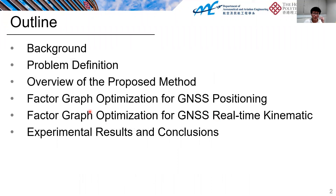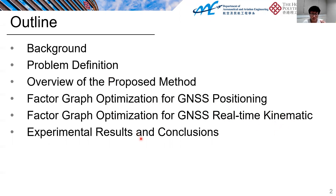Here is the outline of this presentation. It mainly includes the background, the problem definition, overview of the proposed method, the factor graph for GNSS positioning, and for GNSS real-time kinematic positioning, and finally the experiment results and conclusions.